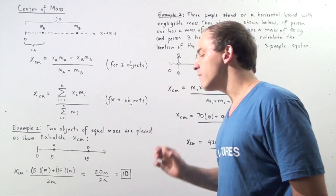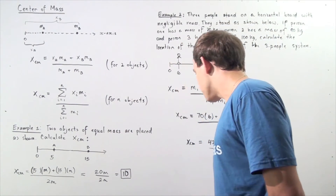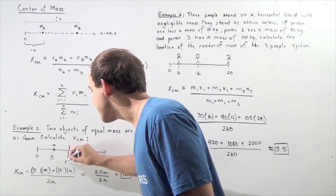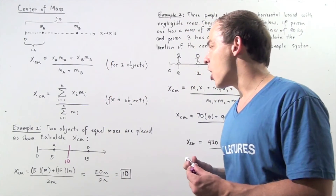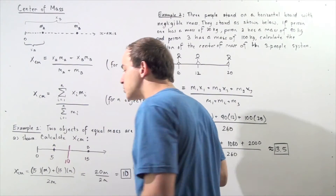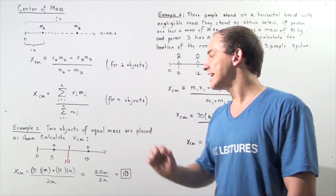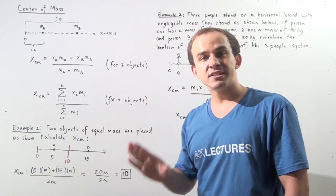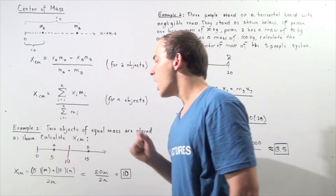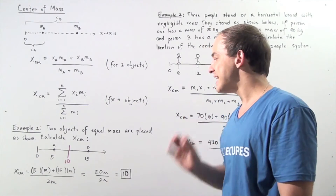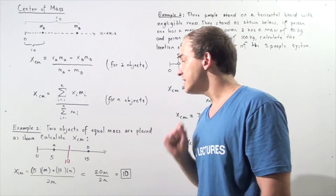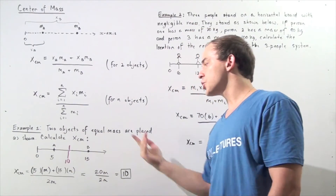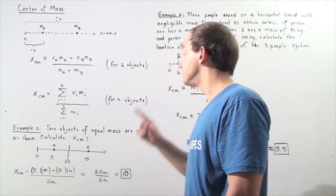The location of the center of mass of our two-object system is right in the middle of the two objects, at a position 10 units from the zero mark. That makes sense because both objects have exactly the same mass. If the mass of object A were larger than object B, the center of mass would be closer to A, and vice versa.